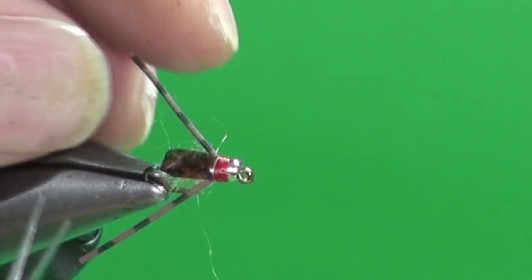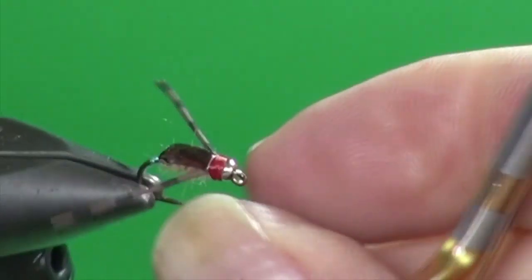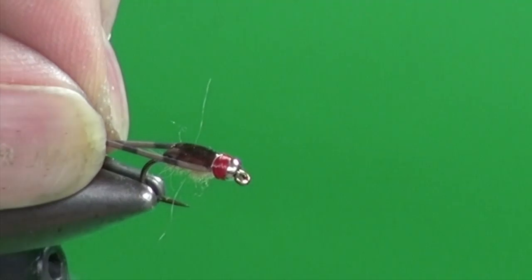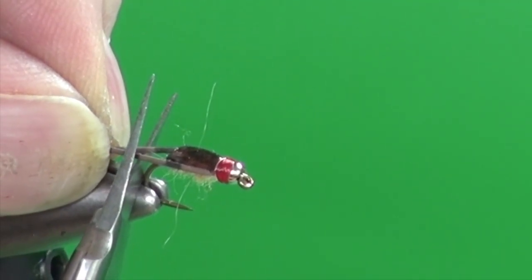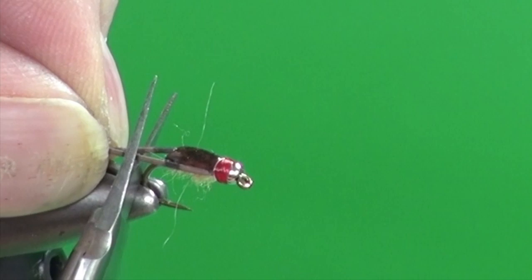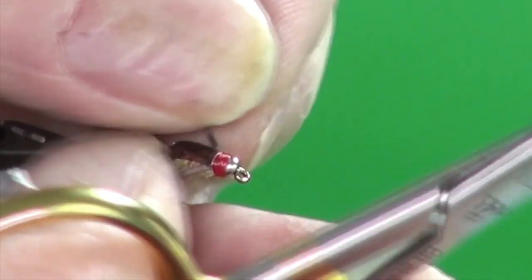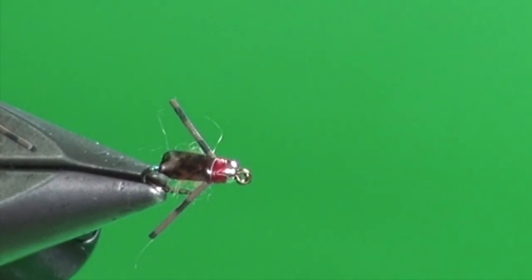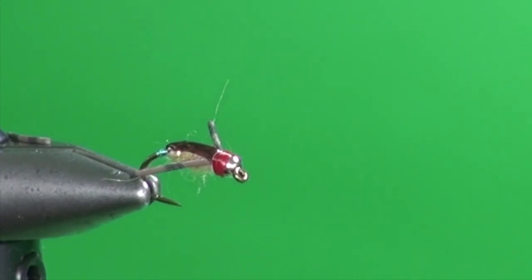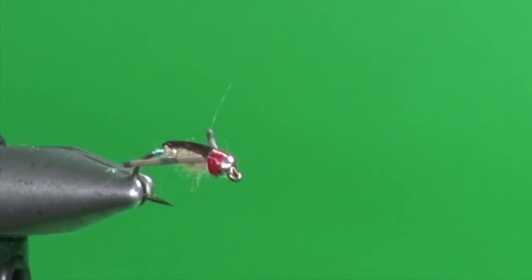And again you see that now we've got that nice little red hot spot there. And we can come in and trim our legs and these are stretchy of course so we don't want to pull on them. I'm just going to come up about the back of the barb, sorry the back of the bend and trim them and that'll bring them into a nice proportional size.